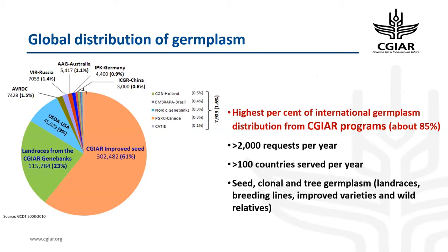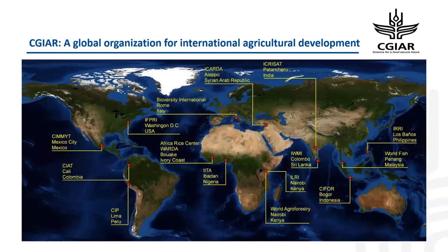Annually, CGIAR programs from both breeding and gene banks contribute to more than 2,000 requests per year, reaching at least 200 countries. This material is distributed in the form of seed, vegetatively propagated material, as well as in vitro and rooted plants, and includes landraces, breeding lines, improved varieties, and wild relatives.